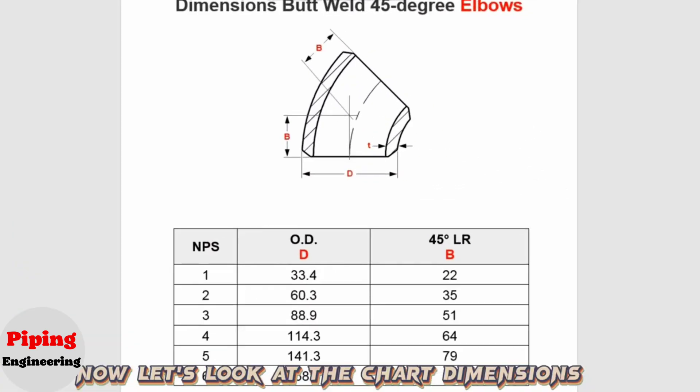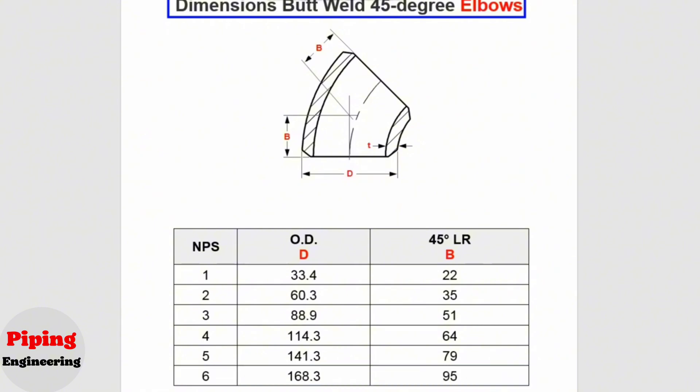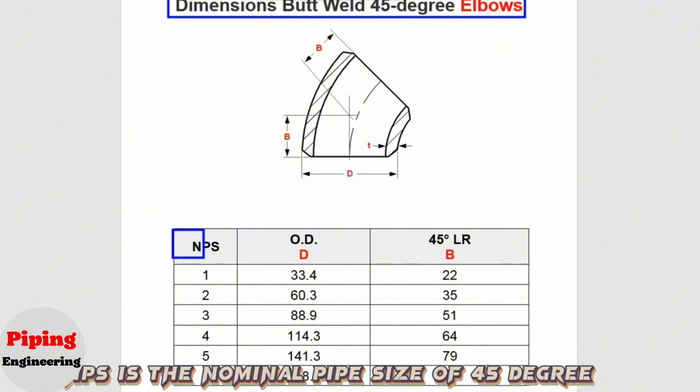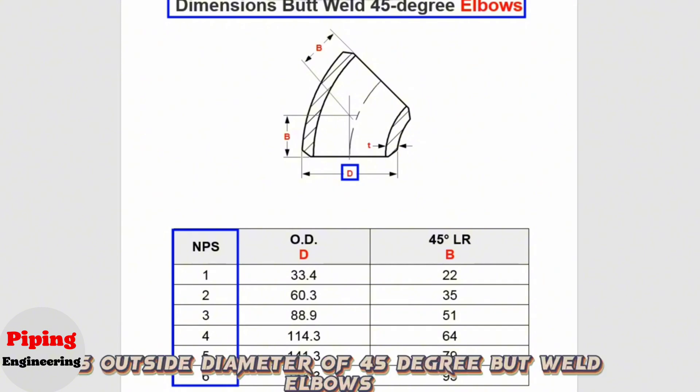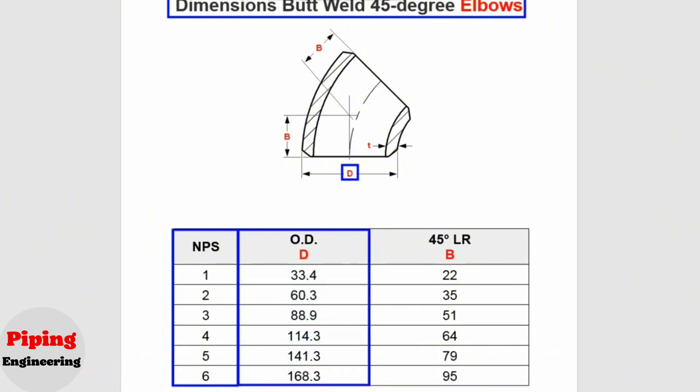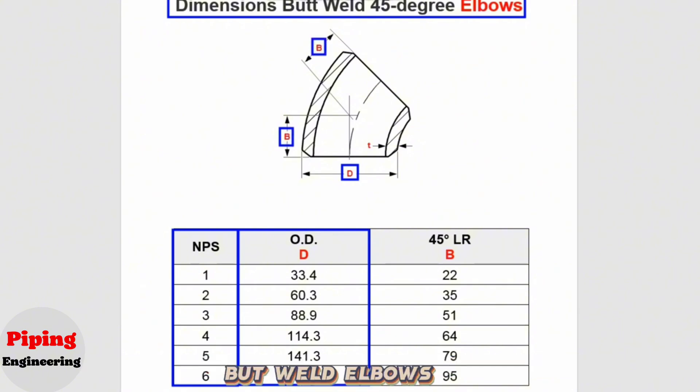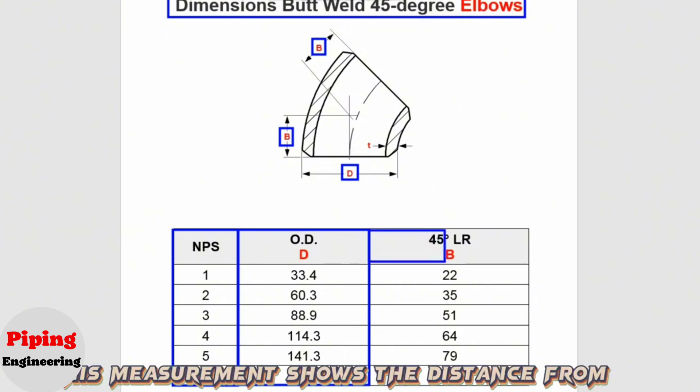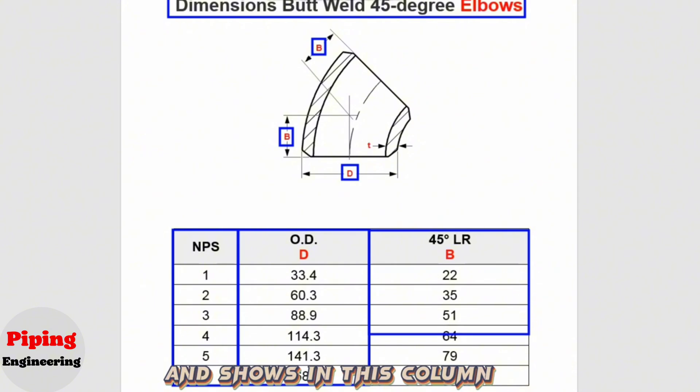Now let's look at the chart dimensions to find out 5-inch 45-degree butt-weld elbow dimensions. NPS is the nominal pipe size of 45-degree butt-weld elbows shown in this column. D is the outside diameter of 45-degree butt-weld elbows shown in this column. B is the center-to-end of the 45-degree long radius butt-weld elbows. This measurement shows the distance from the center of the 45-degree long radius elbows to the end on both sides.